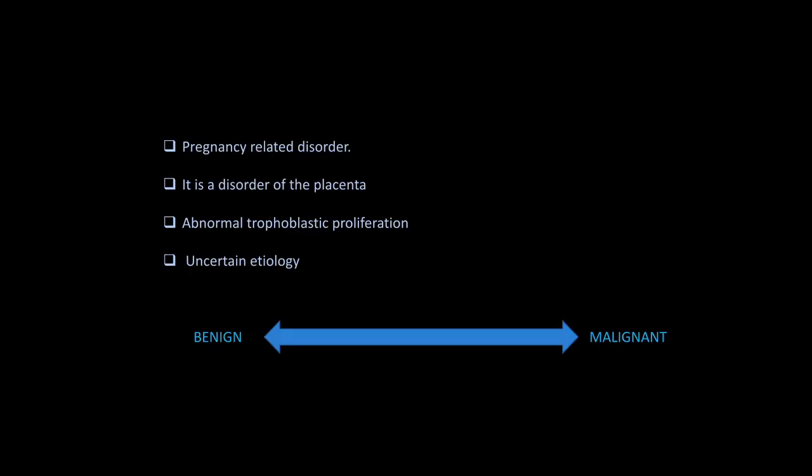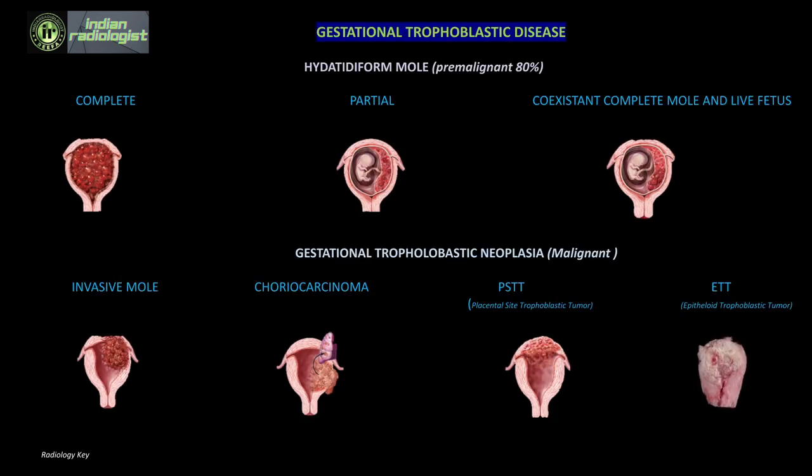Gestational trophoblastic disease is a pregnancy-related disorder due to abnormal trophoblastic proliferation ranging from the benign to the malignant spectrum. The benign or pre-malignant variety comprises 80% bulk: the complete hydatidiform mole, the partial hydatidiform mole, and the lesser-known coexistent complete mole with a live fetus. The malignant end is gestational trophoblastic neoplasia, which includes invasive mole, the dreaded choriocarcinoma, placental site trophoblastic tumour, and epithelioid trophoblastic tumour.